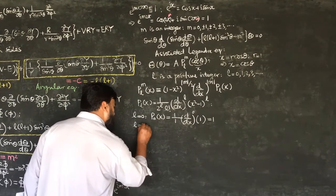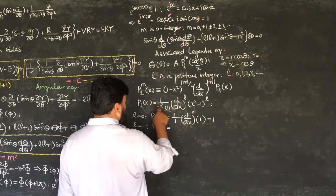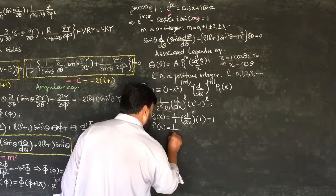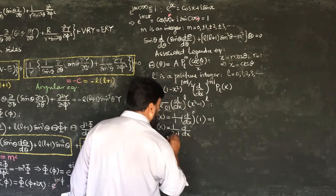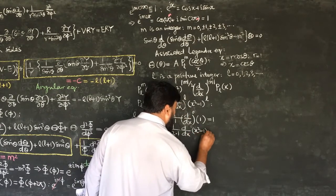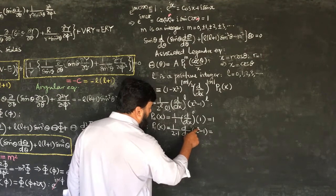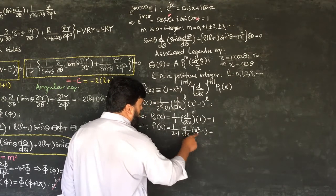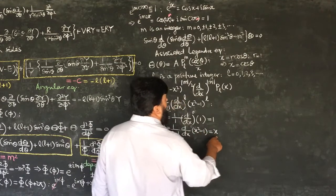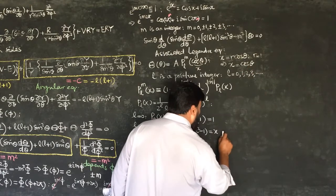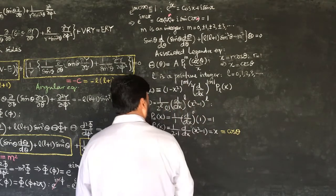For L = 1: P₁(x) = (1/(2¹ · 1!)) · d/dx · (x² − 1)¹ = (1/2) · 2x = x. Converting to θ: x = cos θ, so P₁(x) = cos θ.